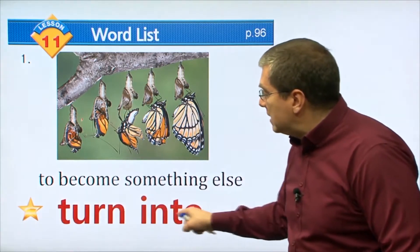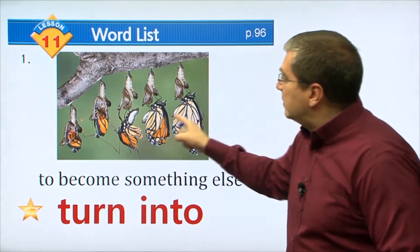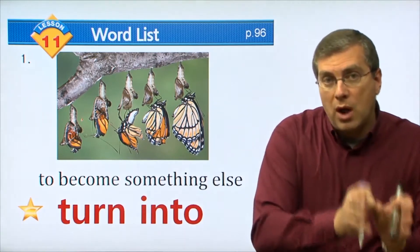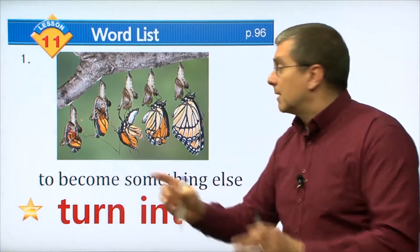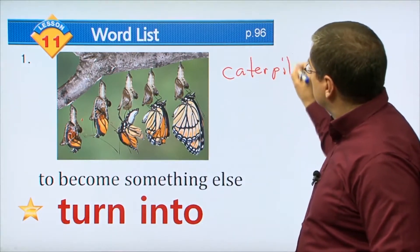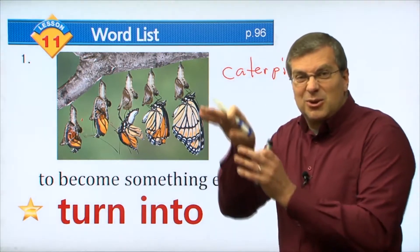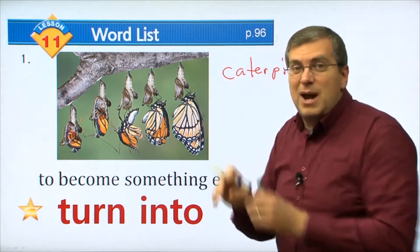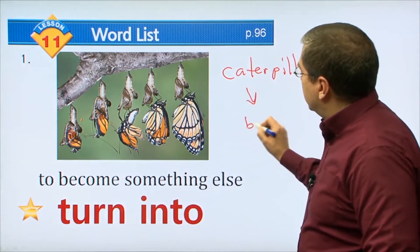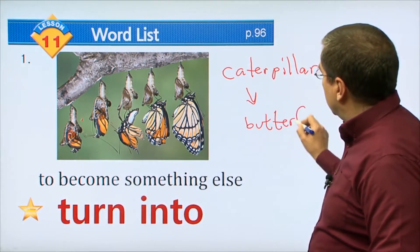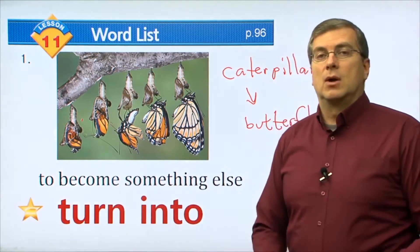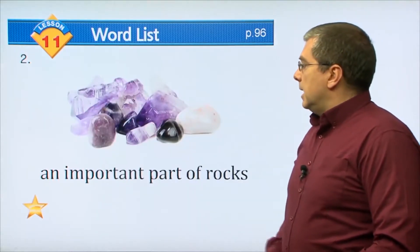The caterpillar used to be here, but it changes and becomes something else. It turns into a butterfly. To turn into means to change from one thing to another. The caterpillar, the little green insect that crawls around and looks like a worm, turns into a butterfly.